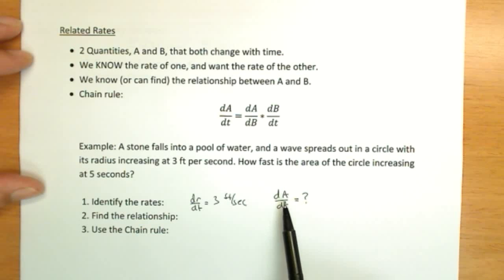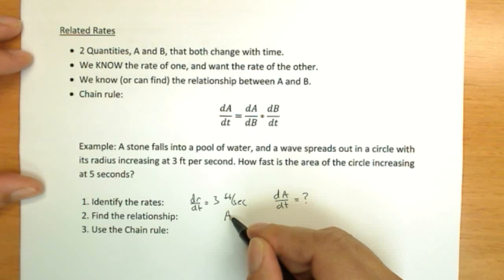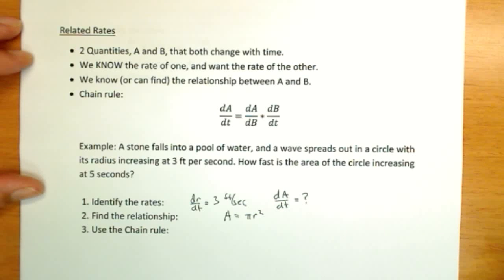So now we've identified for sure we're talking about area and radius. And of course, this is an easily known one. Area of a circle is pi r squared.